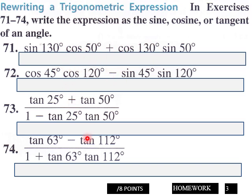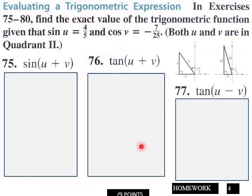Page 4: Find the exact value of the trigonometric function given that sin u equals 4/5 and cos v equals negative 7/25. Both u and v are in quadrant two. Here are your sketches to help you visualize the angles you're dealing with.